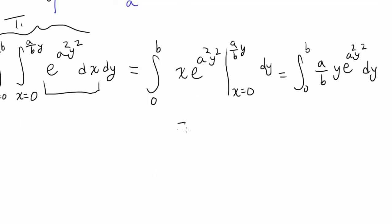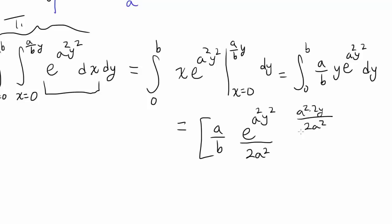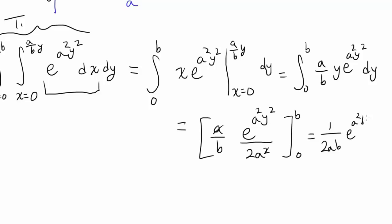We can integrate this easily. We have a over b, and we want e to the a squared y squared. We divide by 2a squared since the derivative of a squared y squared is 2a squared y — leaving just y. So this becomes (a/b) divided by 2a squared times e to the a squared y squared, evaluated from 0 to b. When y equals b, we get 1 over 2ab times (e to the a squared b squared minus 1).